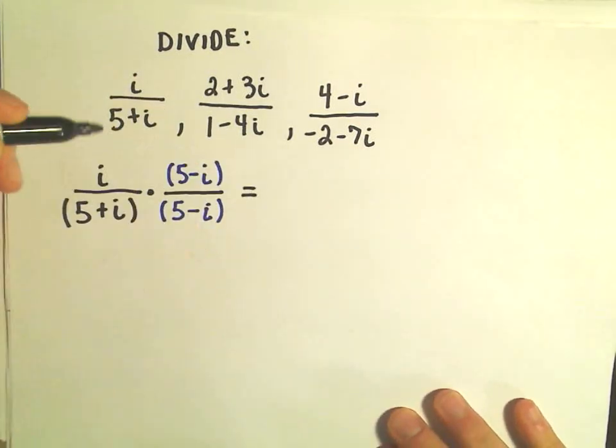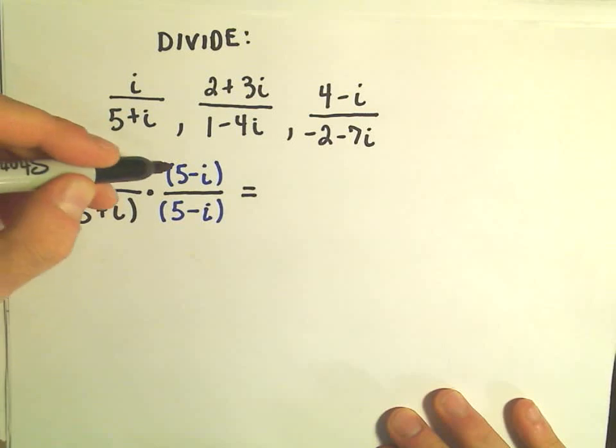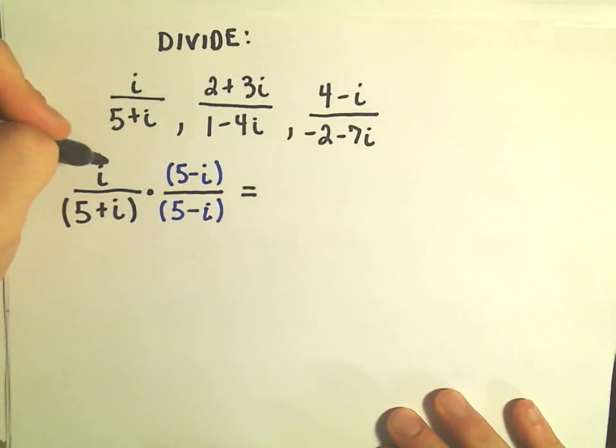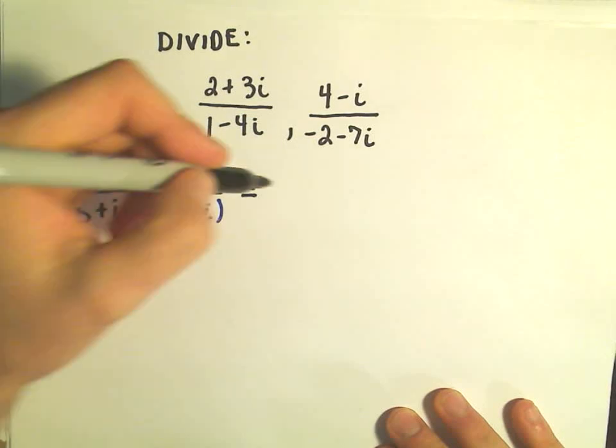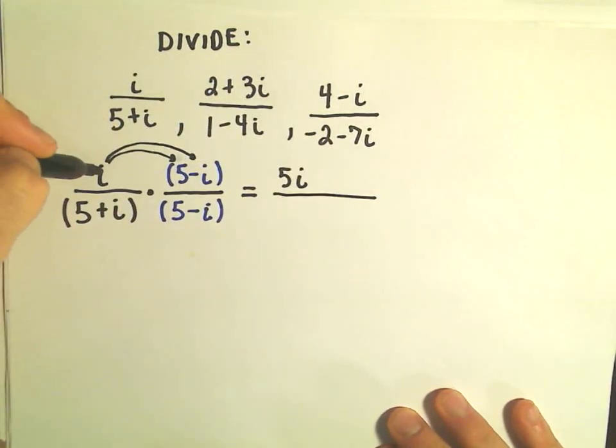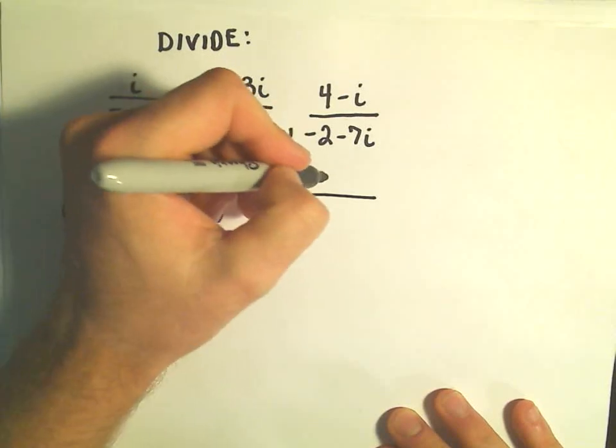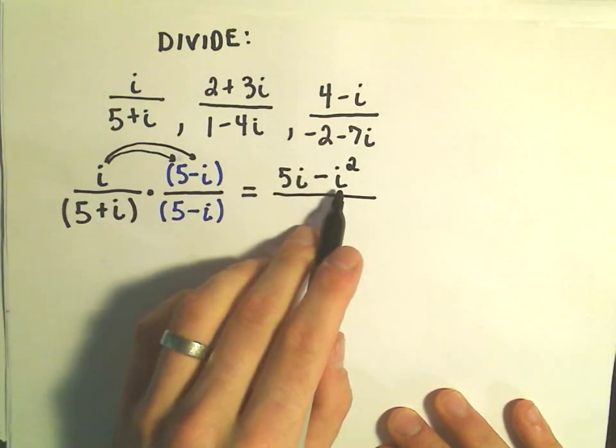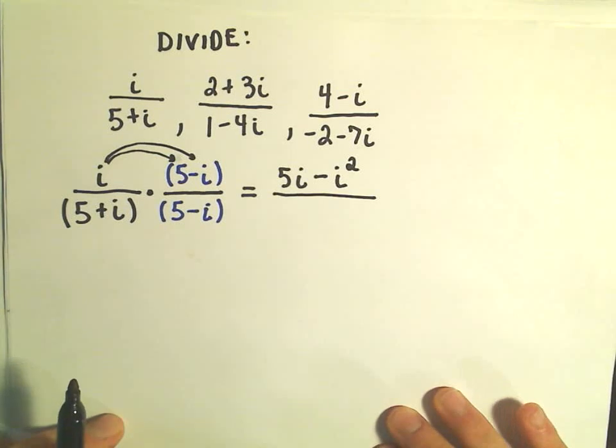So in the numerator, we have i times 5 minus i, so we'd have to distribute the i to both terms. So i times 5, I'm going to write that as 5i. And then we would have i times negative i, which would give us negative i squared, and we'll come back and do some more simplification for sure.